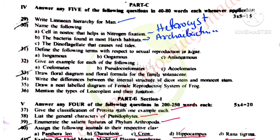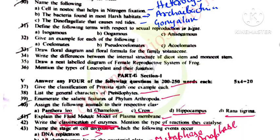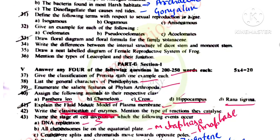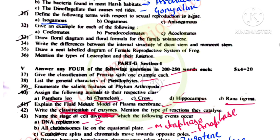The dinoflagellate that causes red tides is Gonyaulax. Define the following terms with respect to sexual reproduction in algae: isogametes are morphologically similar gametes; anisogametes — male gametes are motile and female gametes are non-motile; oogamy — male and female gametes are different in size and motility.